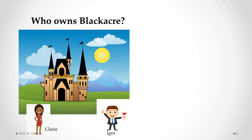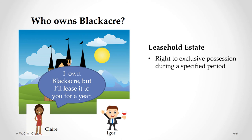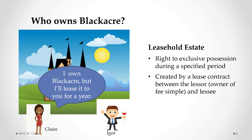Claire is the sole owner of the fee simple estate in Black Acre, and she has now decided to lease Black Acre to Igor for a period of one year. What Claire has created is a leasehold estate — a right to exclusive possession during a specified period. A leasehold estate is created by a lease contract entered into between the lessor, who is the owner of the fee simple estate, and the lessee. The lessor in this case is Claire, and the lessee is Igor.